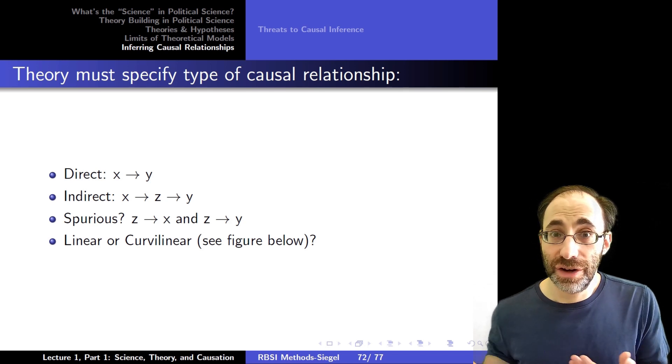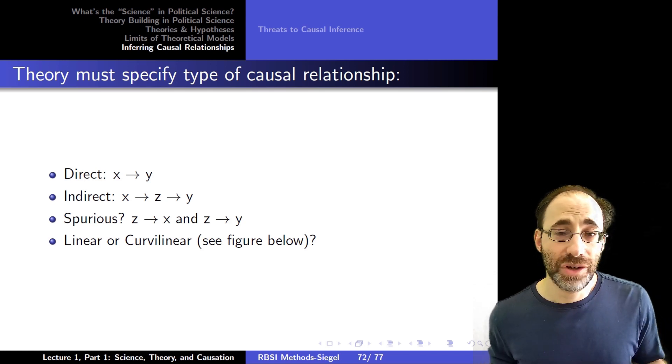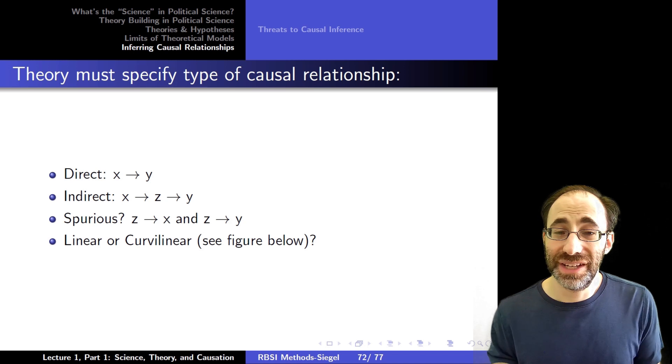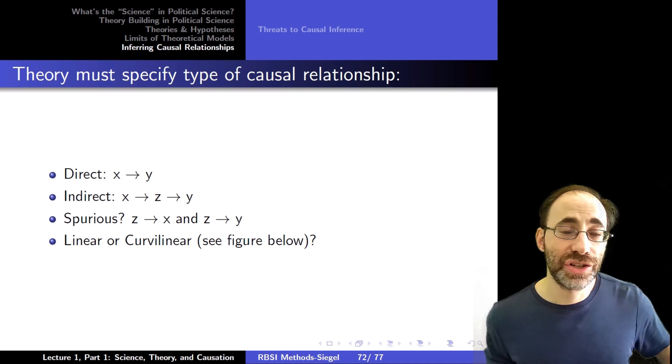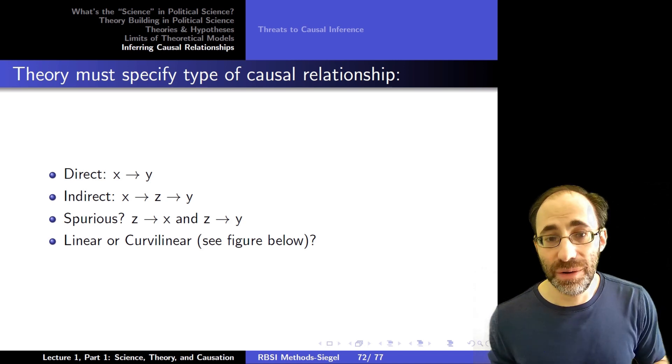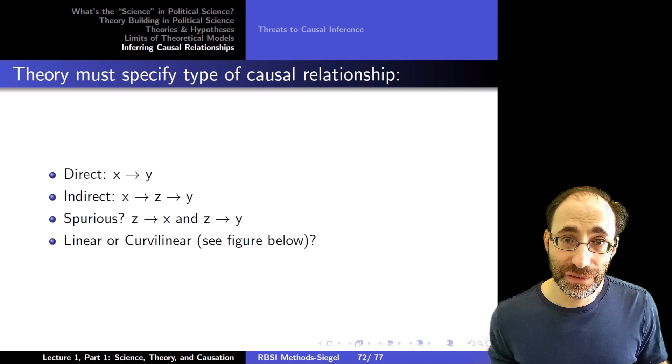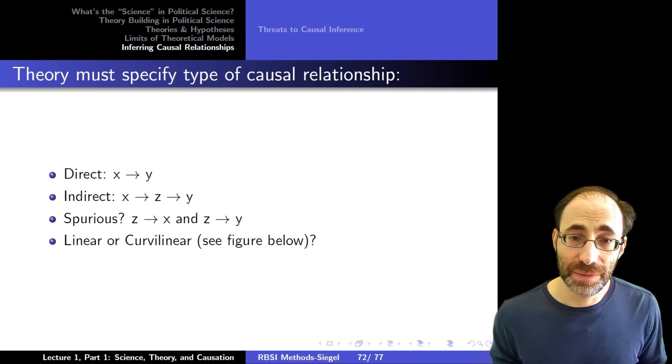And that's dangerous for our causal inference because now the X and Y, even though they occur together, are not in any way, shape, or form causally related. It's actually this third thing, the Z, that causes both. So we have to be really careful for this kind of spurious relationship.